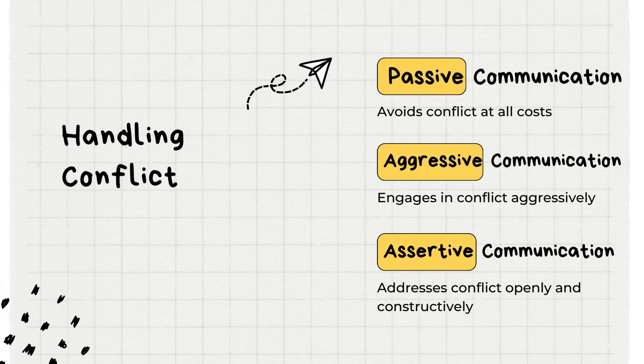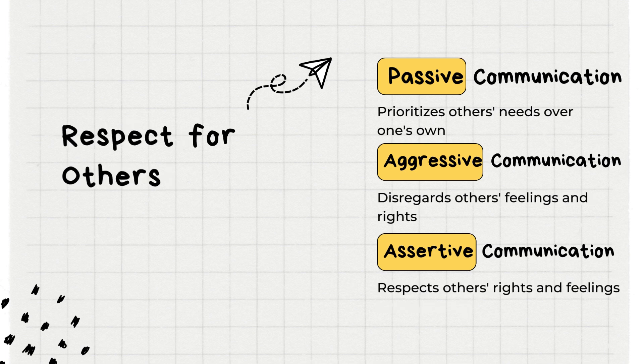This fosters a healthy and positive atmosphere. Respect for Others — Passive Communication: there is a tendency to prioritize others' needs over one's own. While this may seem considerate, it can lead to personal dissatisfaction and unmet needs. Aggressive Communication: aggressive communicators may disregard others' feelings and rights, focusing solely on asserting their own needs and opinions, creating a one-sided and oppressive dynamic in relationships. Assertive Communication: assertive communicators strike a balance, respecting both their own rights and the rights and feelings of others, forming the foundation for healthy and harmonious relationships.